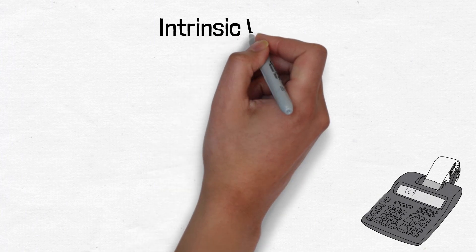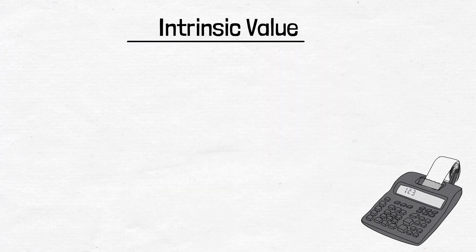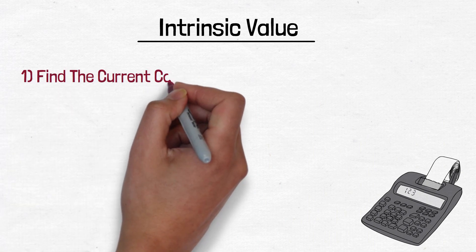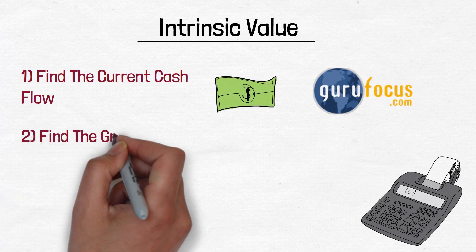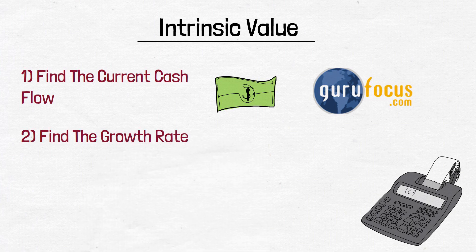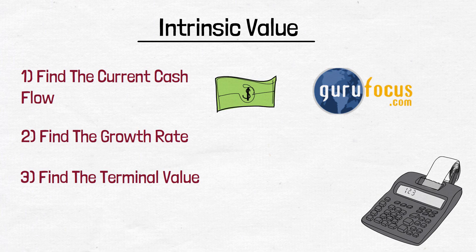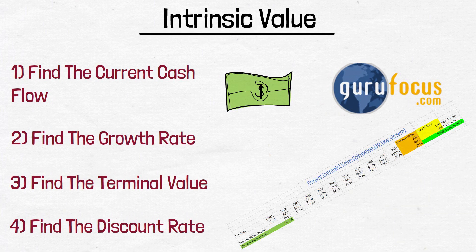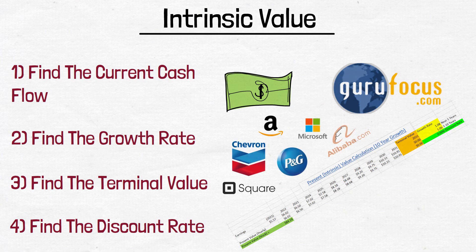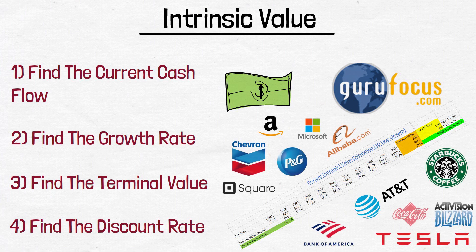Calculating the intrinsic value of a stock — some people think it's very complicated. But if you follow the Warren Buffett method, it's actually quite simple. Step 1: find the current cash flow of the business — you can go to Guru Focus to easily get this figure. Step 2: determine the growth rate for this cash flow for 10 years. Step 3: work out the multiple you think you can sell it for, for your terminal value in 10 years' time. Step 4: work out the discount rate for your cash flows to discount them back to the present day. I've attached the spreadsheet below which makes the practical side much easier. Do this calculation often and you'll start getting very good at calculating the intrinsic value of a stock.